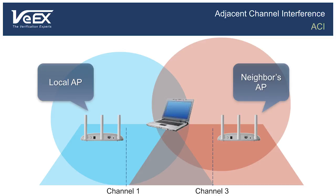Think of two adjacent conference rooms, also full of very polite people. Everyone still waits for their turn to speak in each room, but the noise from the adjacent room occasionally disrupts the conversation in the other. The louder the noise from the adjacent conference room, the more the speaker will have to repeat himself to be fully understood by his own audience. This phenomenon is called adjacent channel interference, or ACI for short.